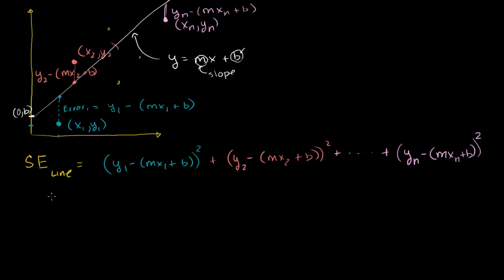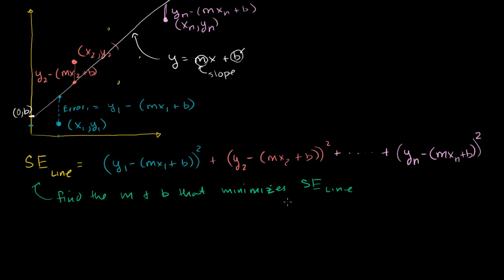And what we're going to do over the next few videos is find the m and b that minimizes this value — that minimizes the squared error of this line. If you view this as the best metric for how good a fit a line is, we're going to try to find the best fitting line for these points. I'll continue in the next video, because with very hairy math problems it's good to deliver one concept at a time, and it also minimizes my probability of making a mistake.